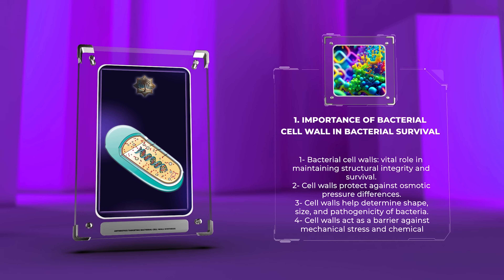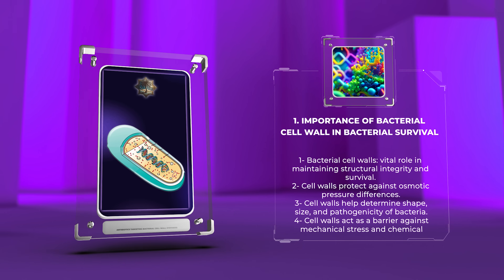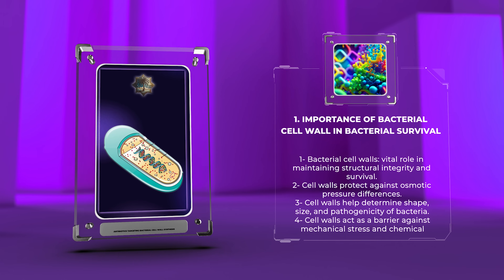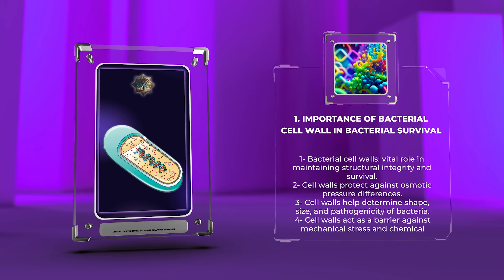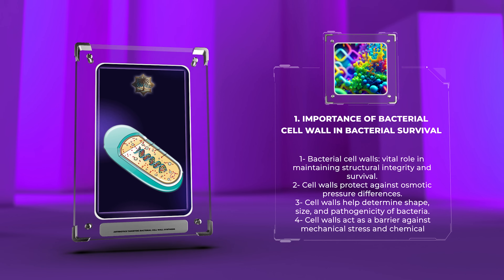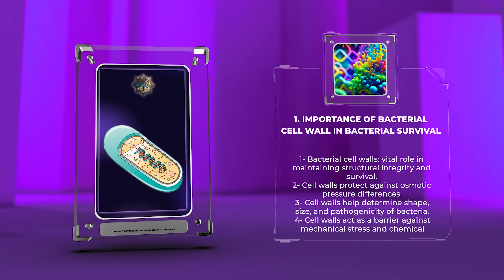size, and pathogenicity of bacteria. The cell wall acts as a barrier against mechanical stress, such as shear forces and osmotic shocks, and also provides protection against chemical agents.